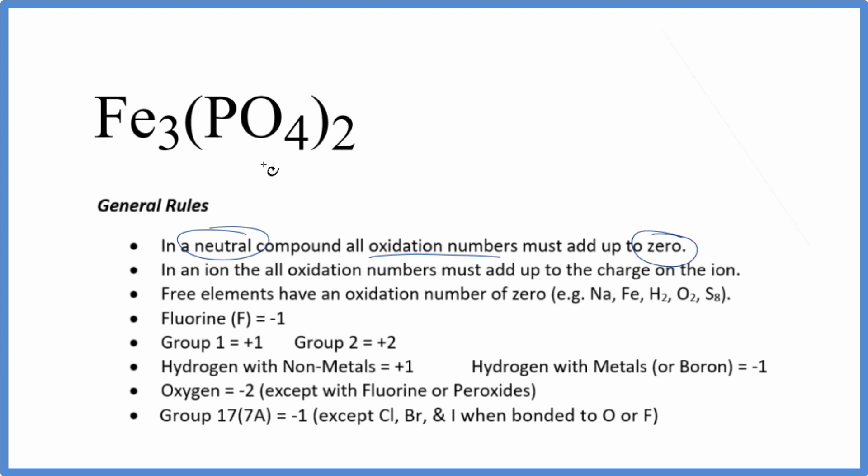To find the oxidation numbers, we have iron, which is a transition metal, so it can have different oxidation states depending on what it's bonded to. We need to recognize that PO₄, this is the phosphate ion, and the phosphate ion has an ionic charge of three minus.